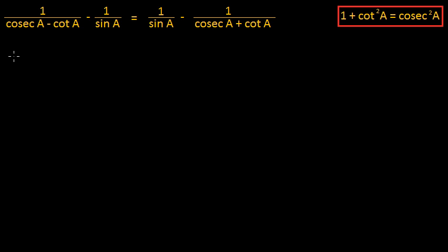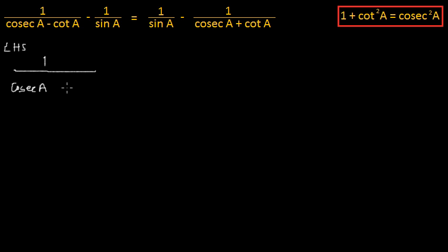Let's first note down the left hand side. The left hand side of this problem is: 1 by cosecA minus cotA, minus 1 by sinA.